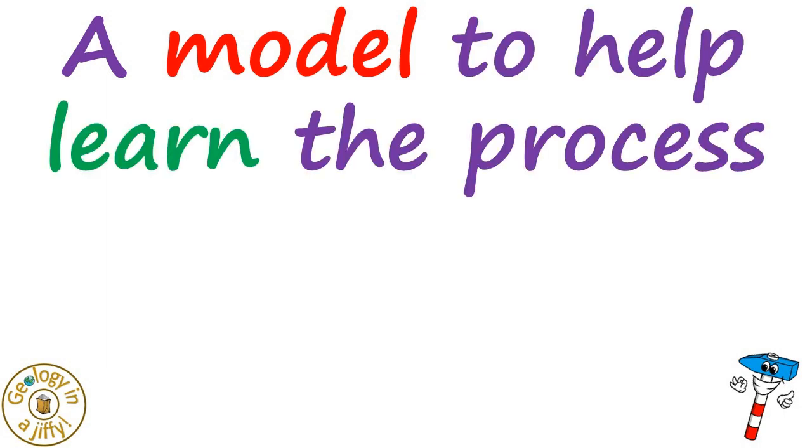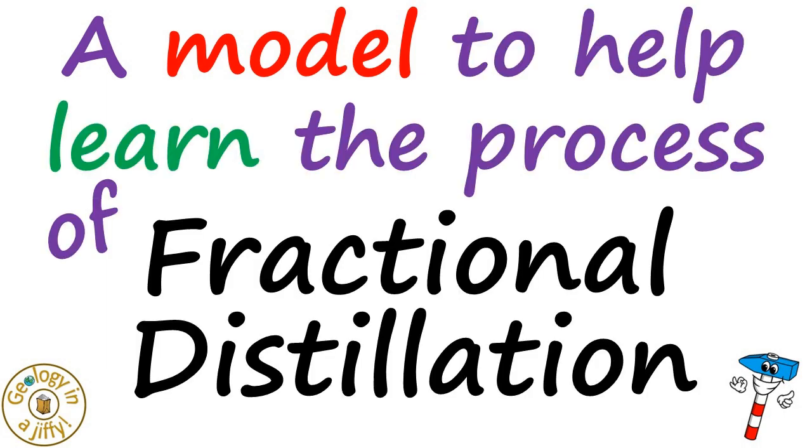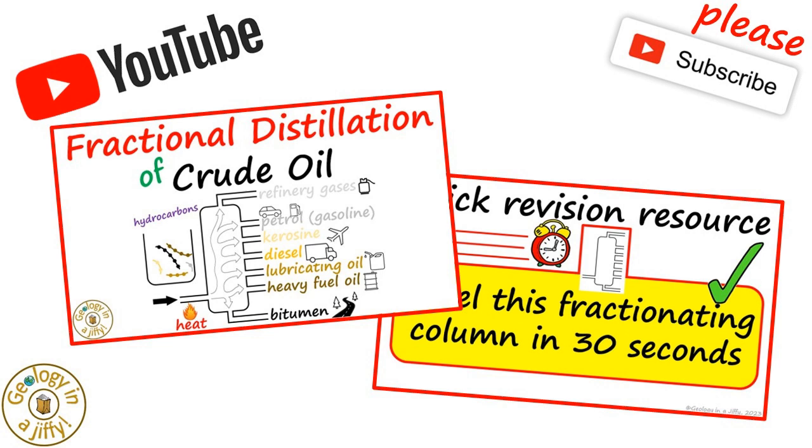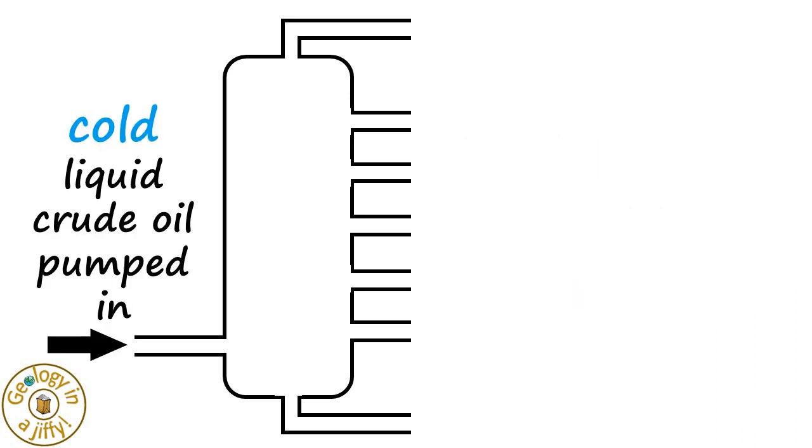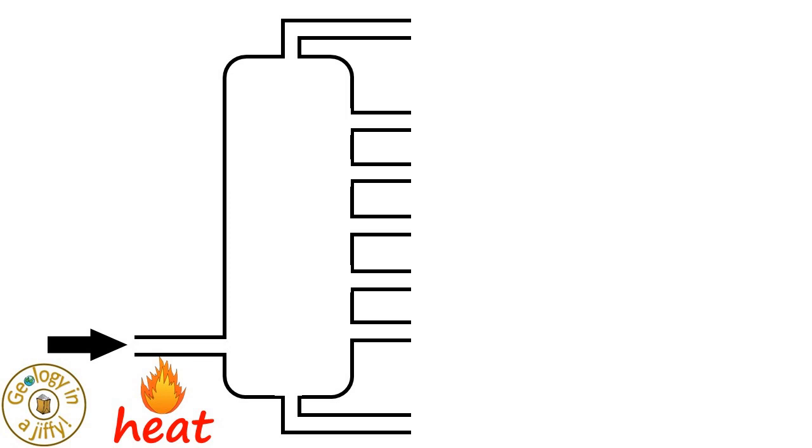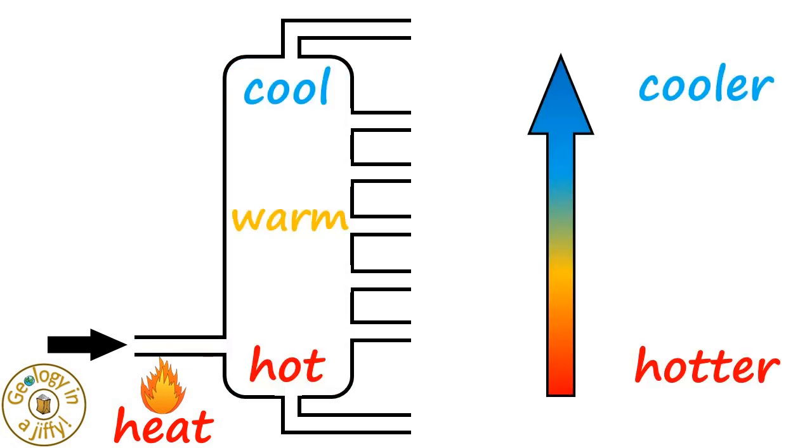A model to help learn the process of fractional distillation. As we know from our video about the process of fractional distillation, a fractionating tower or column is where cold liquid crude oil is pumped in and then heated, with the temperature decreasing towards the top of the tower.